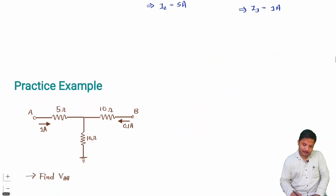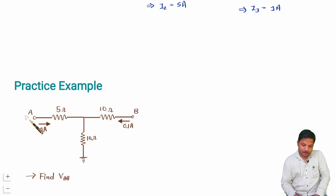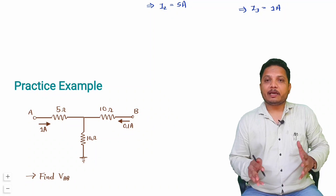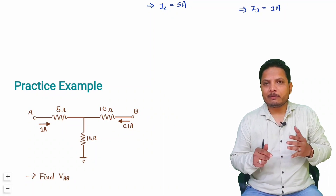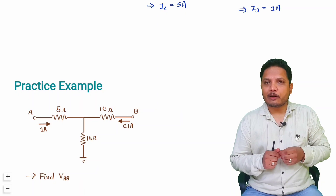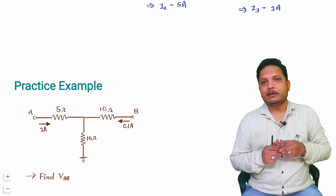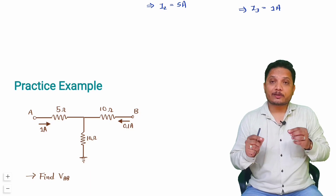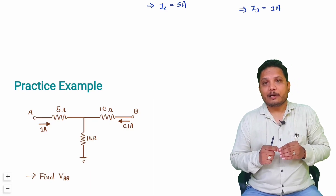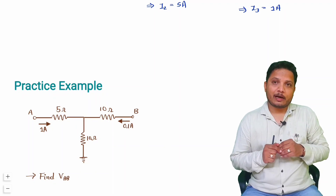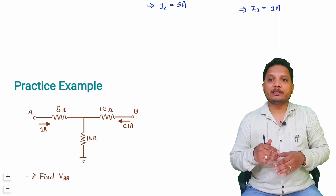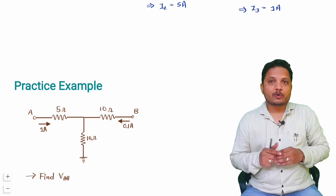In this practice question you are required to find VAB, which is the voltage at A minus B. Current is given and you must find VAB. As a hint: apply Kirchhoff's Voltage Law and you can easily solve for VAB. Write your answer in the comment box — if there is any mistake I will get back to you, and if needed I will post a video to resolve the query. Thank you so much for watching.